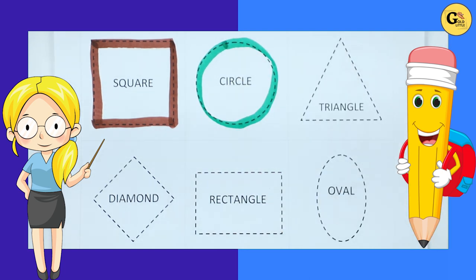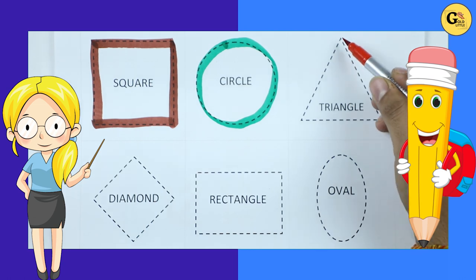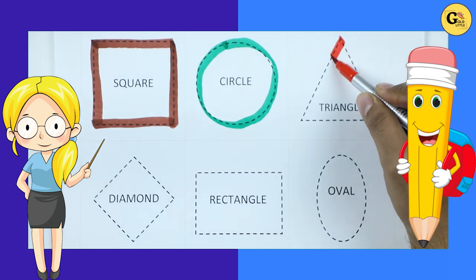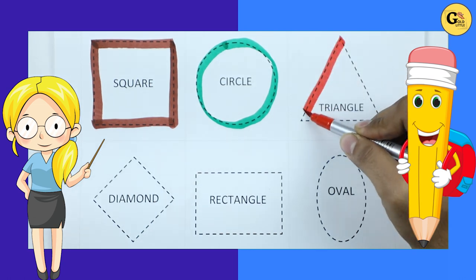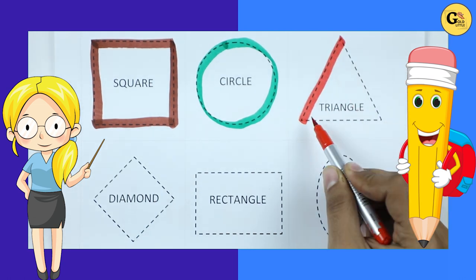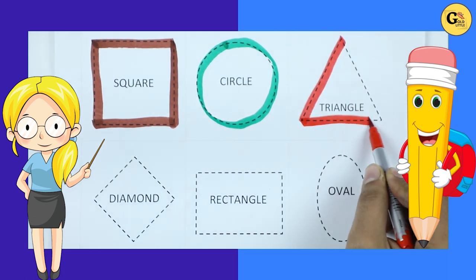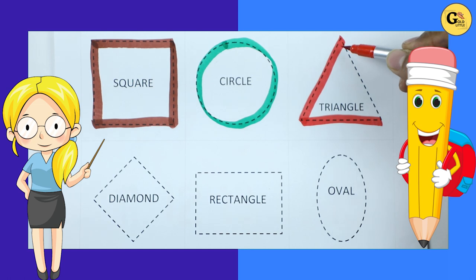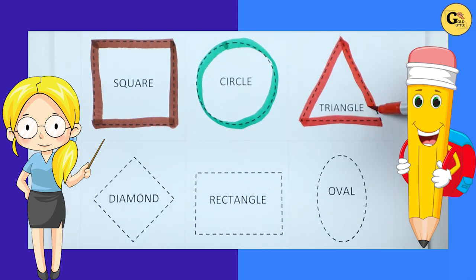Triangle. We make triangle shape with red color. It's triangle.